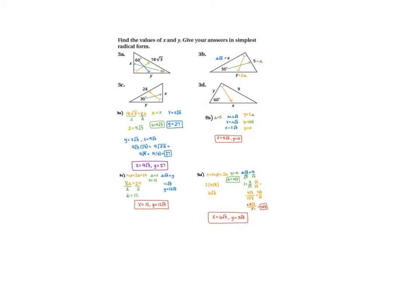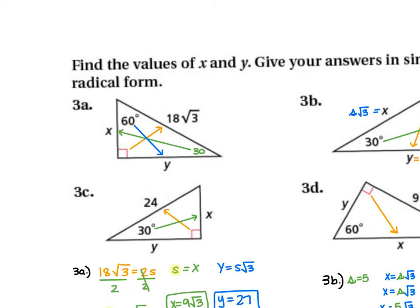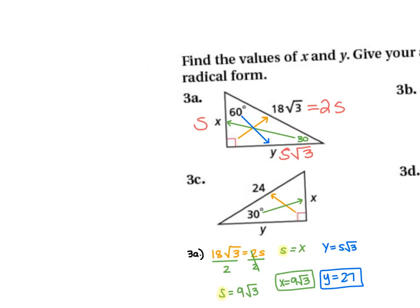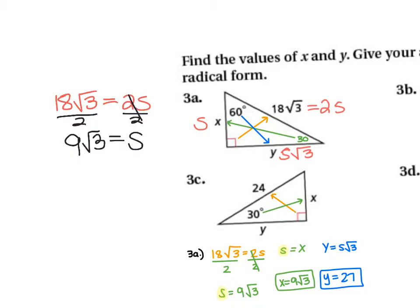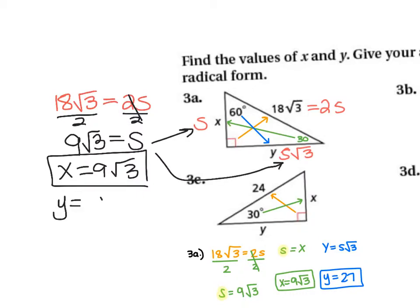In practice problem 3A, opposite the 30° is X (your S), opposite the 60° is Y (S√3), and opposite the 90° is 2S. Given 2S = 18√3, divide both sides by 2: S = 9√3, which is X. Then Y = S · √3 = 9√3 · √3 = 9 · 3 = 27.